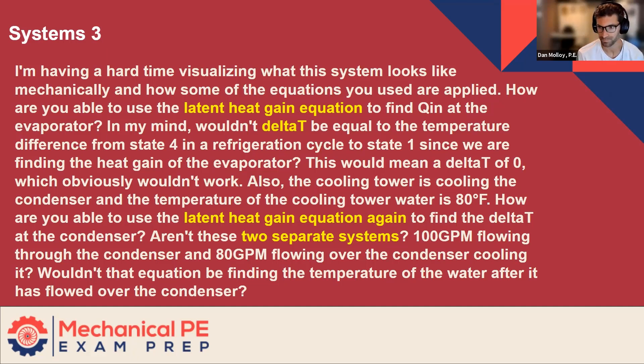So we're going to draw a picture in a moment, which I think will help clear this up. A hundred GPM flowing through the condenser and 80 GPM flowing over the condenser. Now a hundred GPM flowing over the evaporator and 80 GPM flowing over the condenser. So this will make sense when we draw the picture. Wouldn't that equation be finding the temperature of the water after it has flowed over the condenser? Yeah, that's what the question is asking.